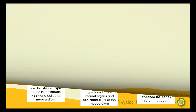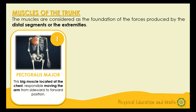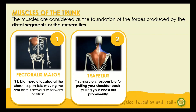Now we will familiarize the muscles found in our trunk. The trunk muscles are considered the foundation of forces produced by the distal segments or the extremities. Number one is the pectoralis major — pakihawakan nga ang muscle sa ating chest. This big muscle located at the chest is responsible for moving the arm from a sideward to a forward position. Next is the trapezius — this big muscle is responsible for pulling your shoulder back and pulling your chest out prominently. Pakihawakan nga ang inyong trapezius.